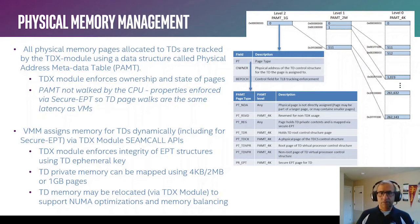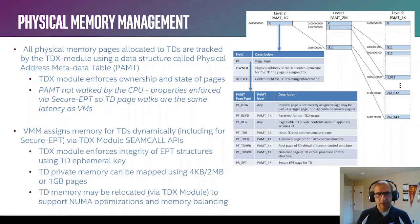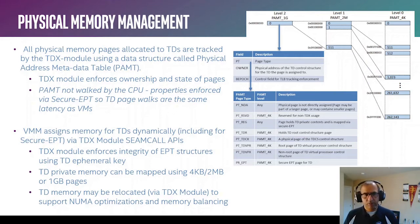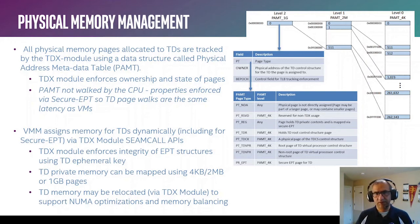Because the PAMT structure maintains information at 1 GB, 2 MB, and 4 KB levels, TD private memory can be mapped in any of these sizes. TD private memory may also be reallocated or relocated by the VMM to support various NUMA optimization strategies the VMM may already employ.